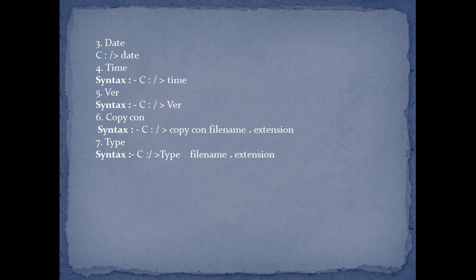The fourth one is the time command — same as date, time command is used for changing or modifying the time. The fifth one is the VER command — VER command is used for knowing which OS we are currently running and what is the origin of that OS.